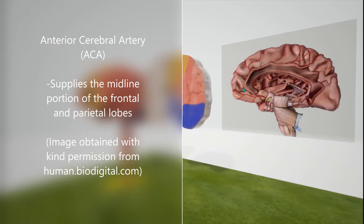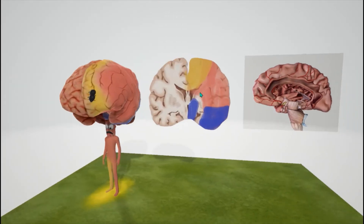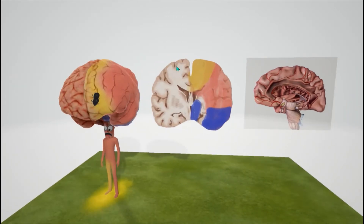We see it's supplying the midline of the brain in the frontal lobe and the parietal lobe. This is a cross-section of the brain. The yellow here is going to represent the anterior cerebral artery — what it's supplying, this portion over here.